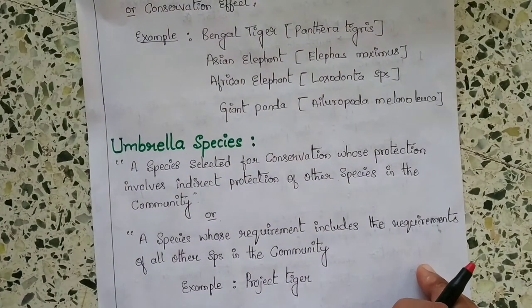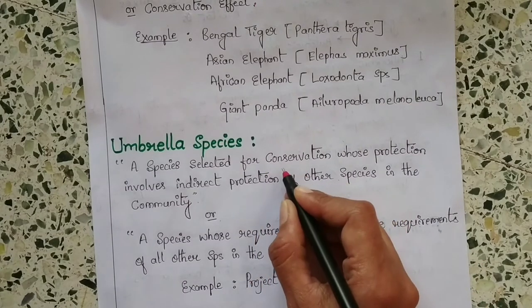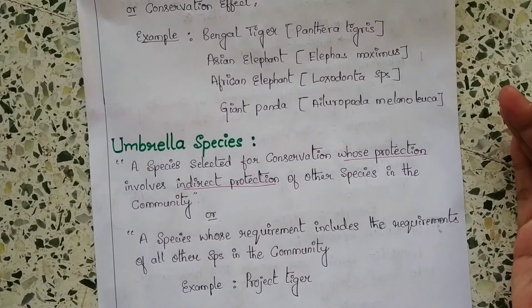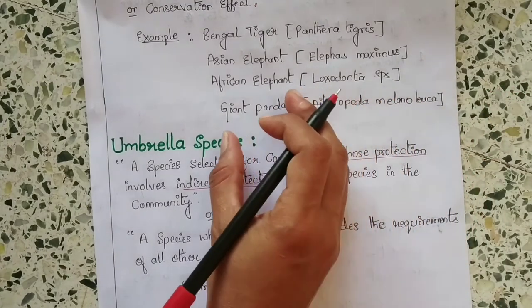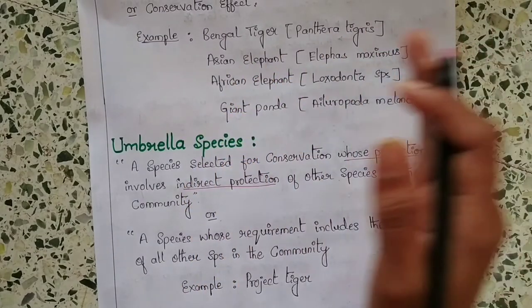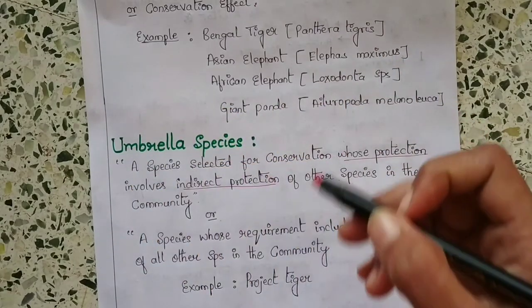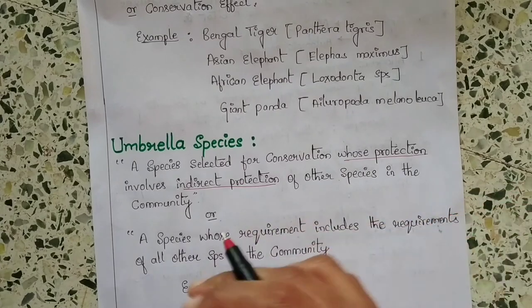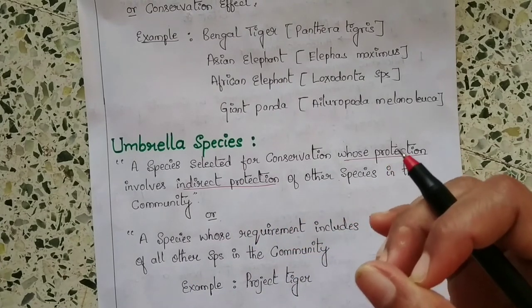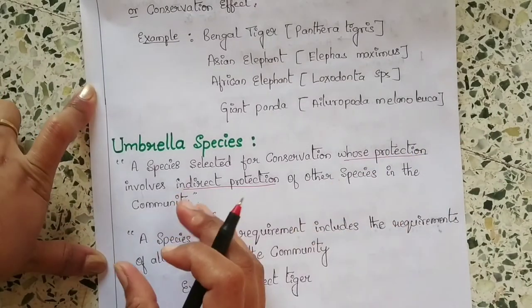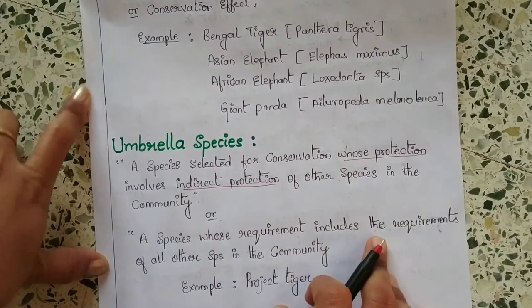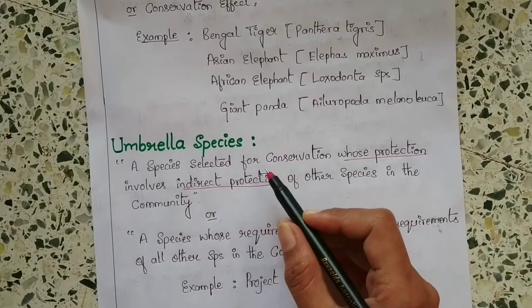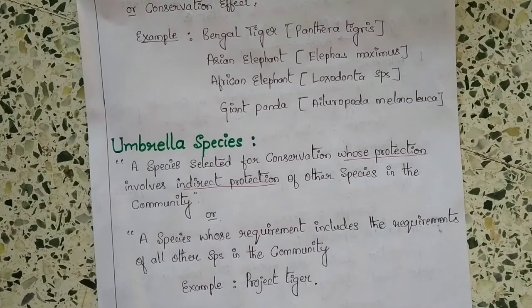The next term is umbrella species. Umbrella species are those species selected for conservation whose protection involves the indirect protection of other species in the community. If you protect one kind of animal, that protection indirectly helps other species too — just like an umbrella covers other people standing with you. A species whose requirements include the requirements of all other species in the community is called an umbrella species. An example is Project Tiger.